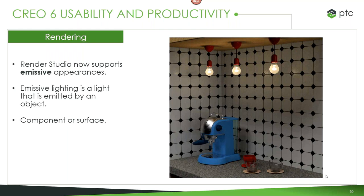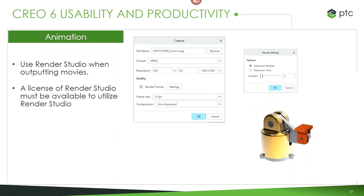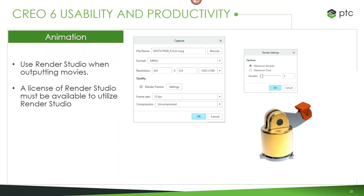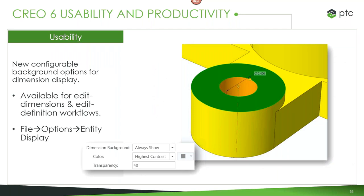Everything visible in this pane represents Creo objects in Creo Parametric using our Render Studio application to give them a more realistic appearance. Render Studio also now supports animations, so you can have different parts move around while maintaining realistic rendering. In the detailing world, drawing names can be automatically extracted from parts — if you have a particular naming convention, you can automatically assign that to your drawings when applying to a template. Color customization has also been expanded to include dimensions and edit definition windows.